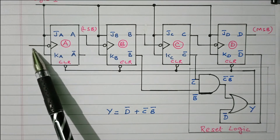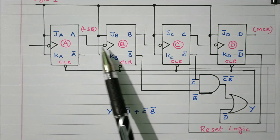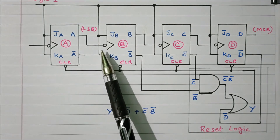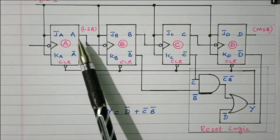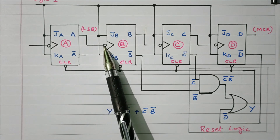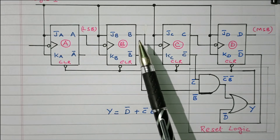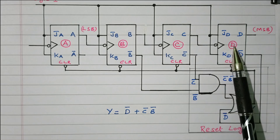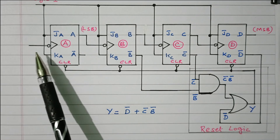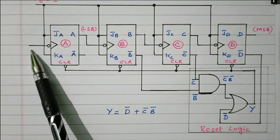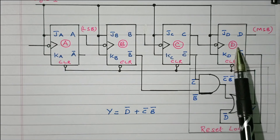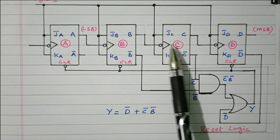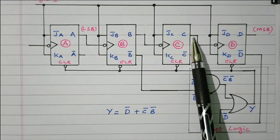Flip-flop A receives the clock pulse directly, so every clock pulse its output toggles. Flip-flop B uses the output of A as its clock — it toggles based on A's value. An inverter is used, so when A is 0 (inverted to 1), B toggles; when A is 1 (inverted to 0), B does not toggle. Similarly, C toggles based on B's output, and D toggles based on C's output — this is the ripple (asynchronous) chain.